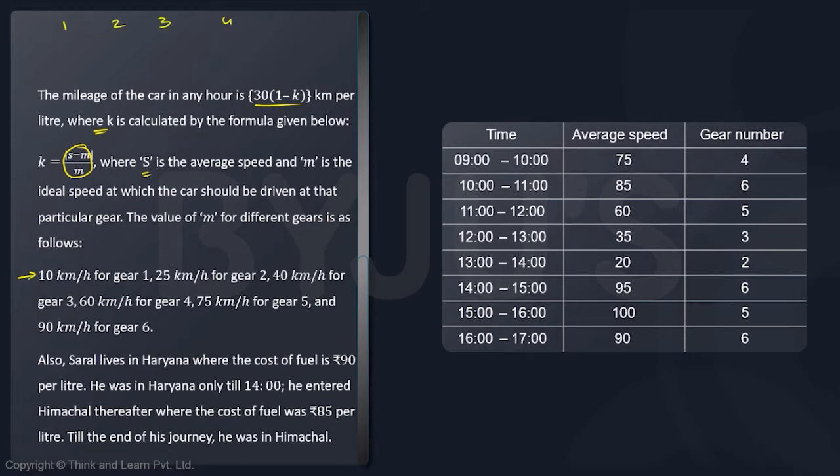k is given as |s - m| / m where s is the average speed and m is the ideal speed for that car. For gear number 1, 2, 3, 4, 5, 6, the m values are 10, 25, 40, 60, 75, and 90.